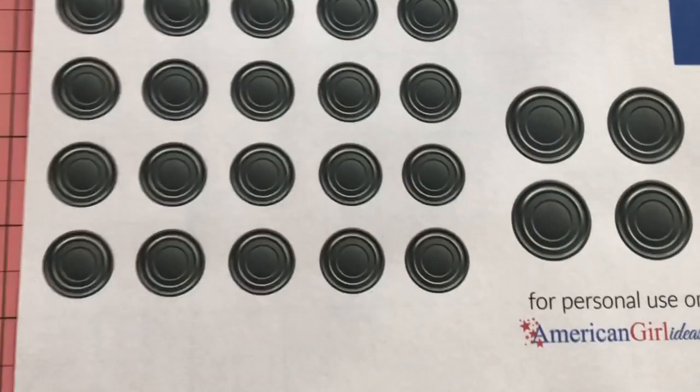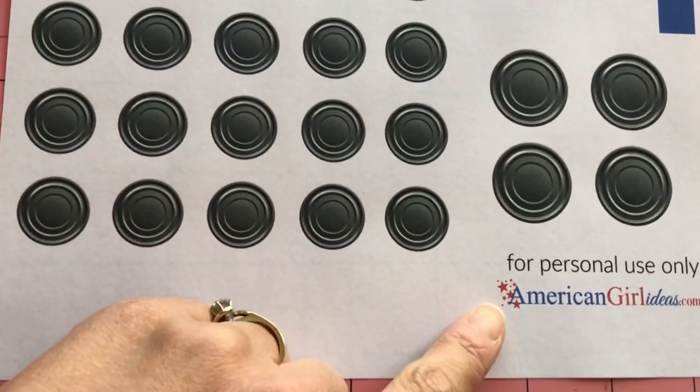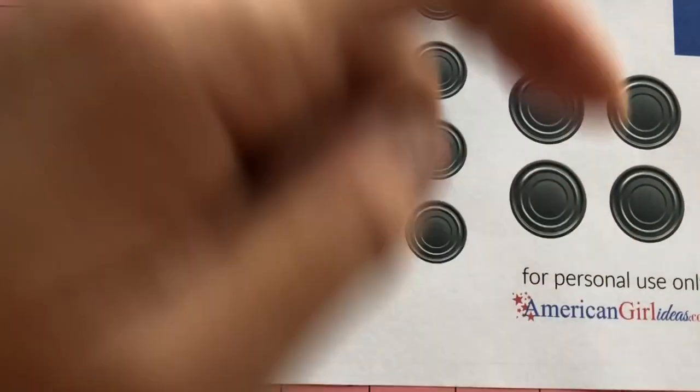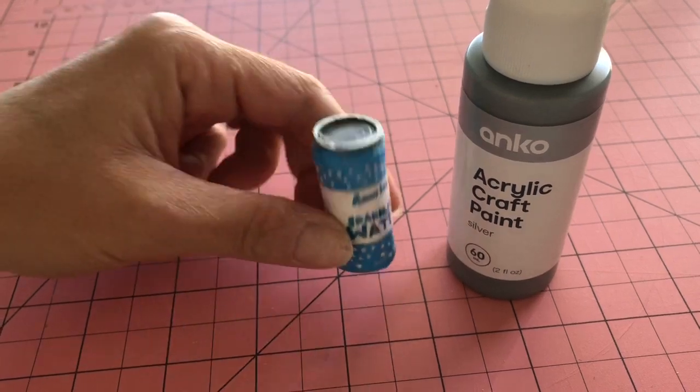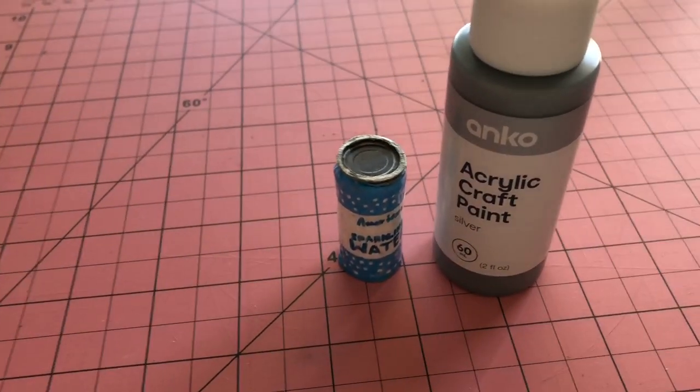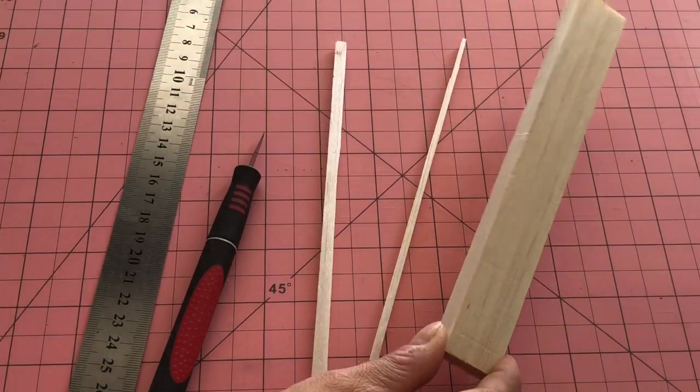To add more detail, visit American Girl Ideas blog for the tin can printables. A link will be in the description box below. Cut two and glue them to the top and bottom of the can. Finish off by painting the rim silver.